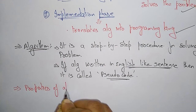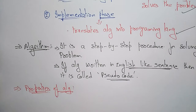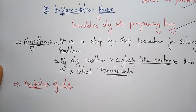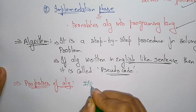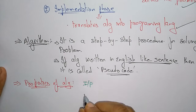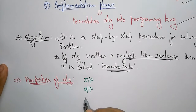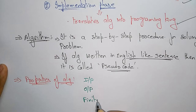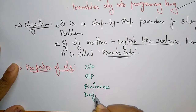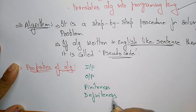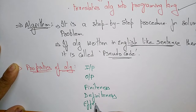Now coming to the properties of algorithm. If you take any programming language, first you have to create an algorithm. The properties involved in an algorithm are: input, output, finiteness, definiteness, and effectiveness. These are the five properties involved in an algorithm.